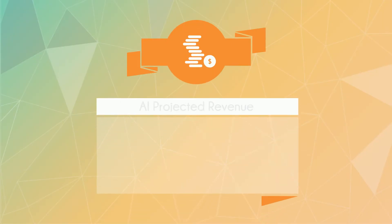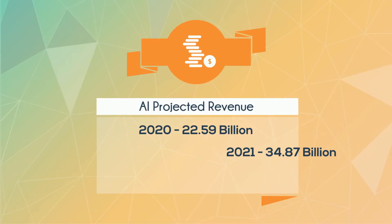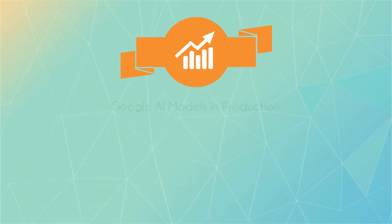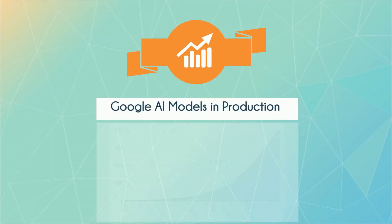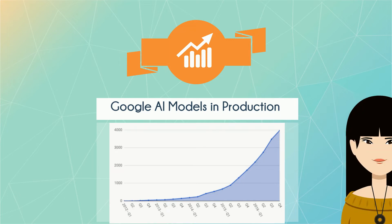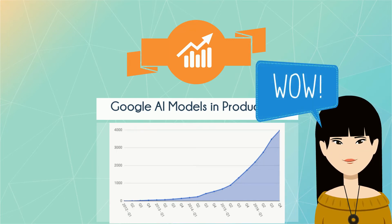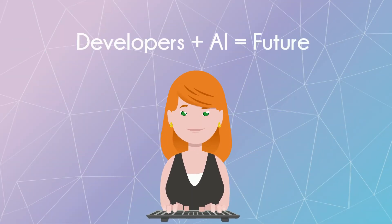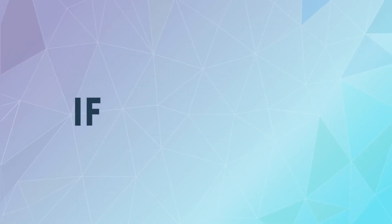Investors are throwing billions into AI startups. AI is everywhere. Google went from having fewer than 10 AI models in production in 2012 to over 4,000 in 2017. As developers, AI is coming our way. Startups aren't asking if they're going to implement AI, but how.